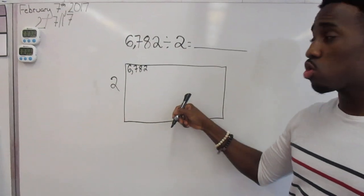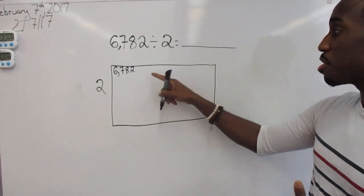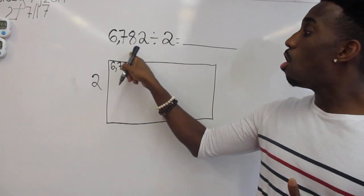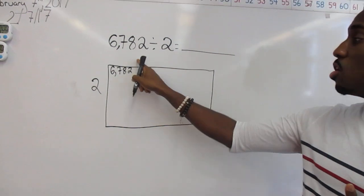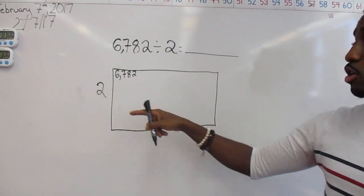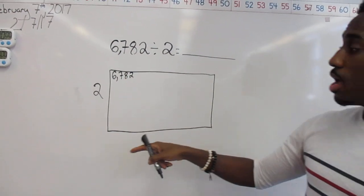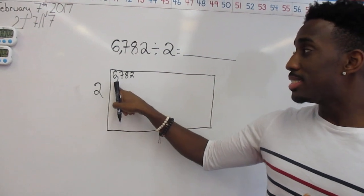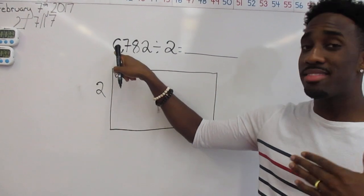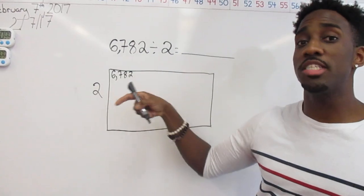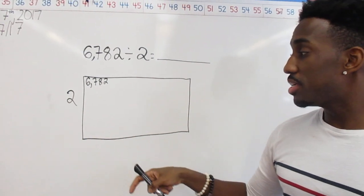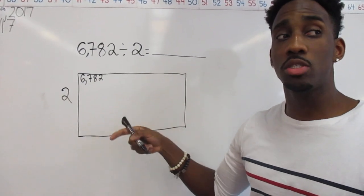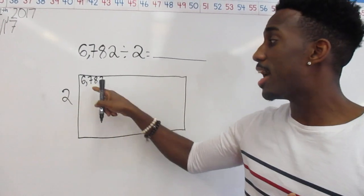My answer, or my quotient, I'm going to figure it out — it's going to be my total number, the total of this side length. Now I want to talk about my thousands place. Since I have 6,000 and thousands is the greatest place value, I want to think to myself: 2 times what thousand would get me closest to 6,000?